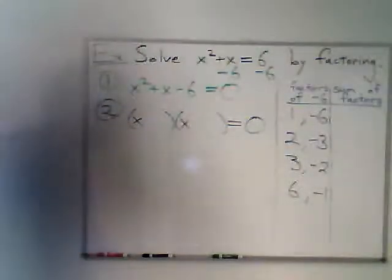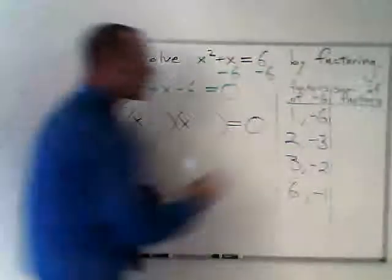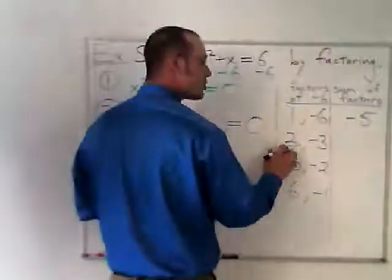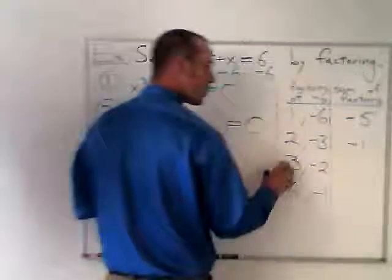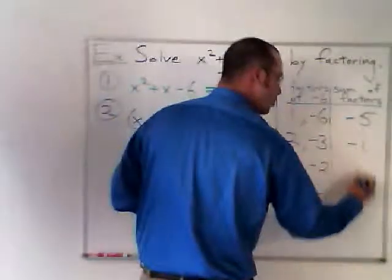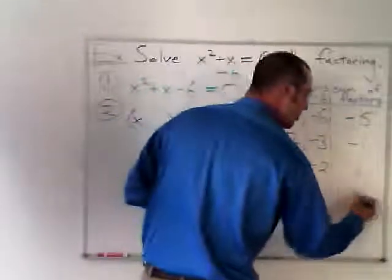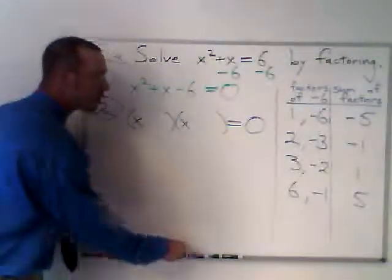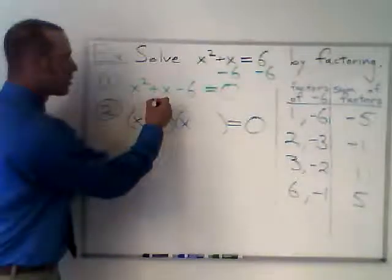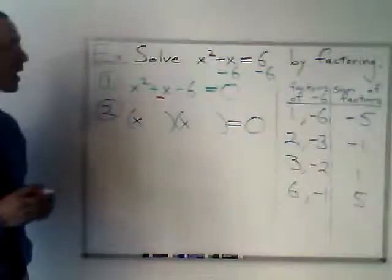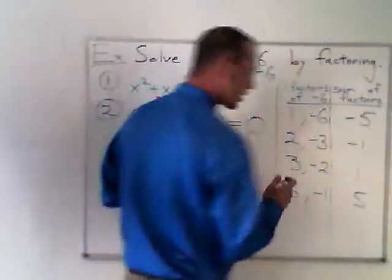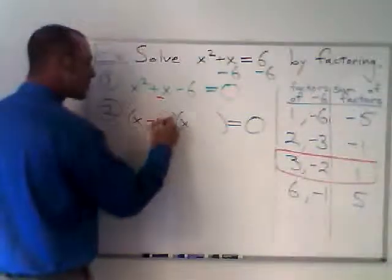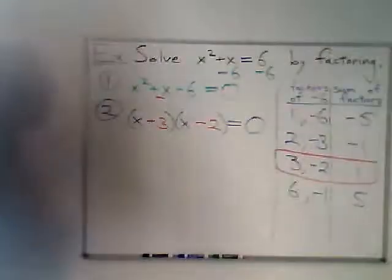Now, I've got my left-hand column complete. Let's go through the right-hand column. One plus negative six is negative five. Two plus negative three is negative one. Three plus negative two is one. And six plus negative one is five. So the factors that I'm looking for, well, what's the sum that I'm looking for? It's the coefficient of the X term in my quadratic expression. So that would be this one here. And the factors I'm looking for are three and negative two. A positive three, negative two. Got my expression factored.